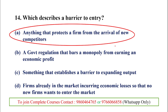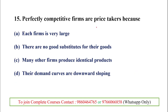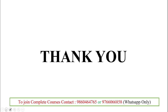The final question for viewers: perfectly competitive firms are price takers because — is it that the firm is very large, there are no good substitutes for their goods, many other firms produce identical products, or their demand curves are downward sloping? Please give the answer in the comment box. We will meet in the next video with another topic.